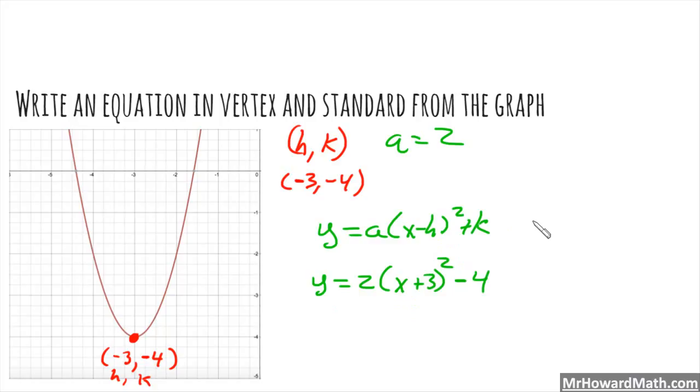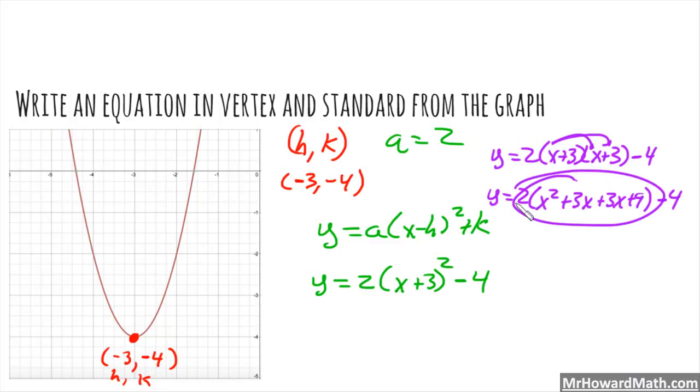We need standard form. So y equals 2, x plus 3. We're going to square that quantity, so write it times itself, subtract 4. Now we FOIL this out. So we get y equals 2 times x squared plus 3x plus 3x plus 9, subtract 4. Make sure you write this in parentheses so that you remember to then distribute this value in.